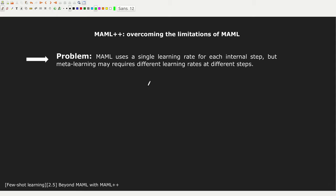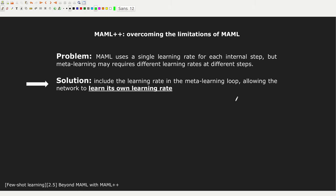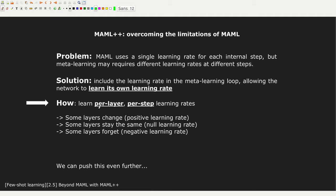Now, this is not the only problem. The multi-step loss solves some issues, but there are other issues causing this instability in MAML. Another issue is that MAML uses a single learning rate for each of the inner steps. MAML++ uses a different solution — they learn the learning rate using the meta-learning loop. So the network is going to learn its own learning rates, and more importantly, for each layer and for each step, they learn a different learning rate.